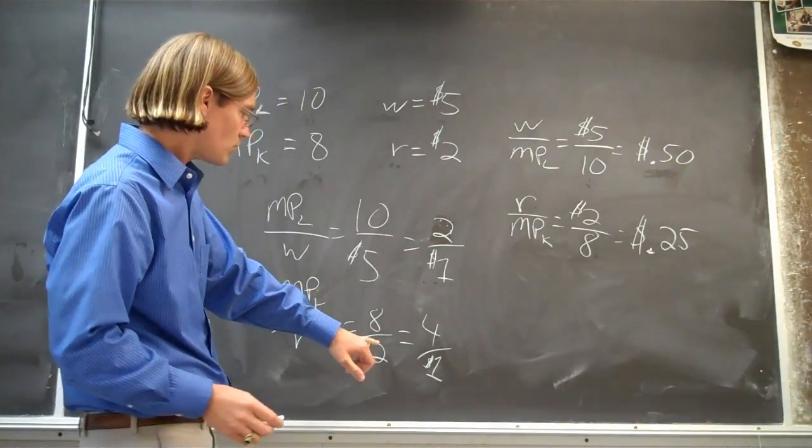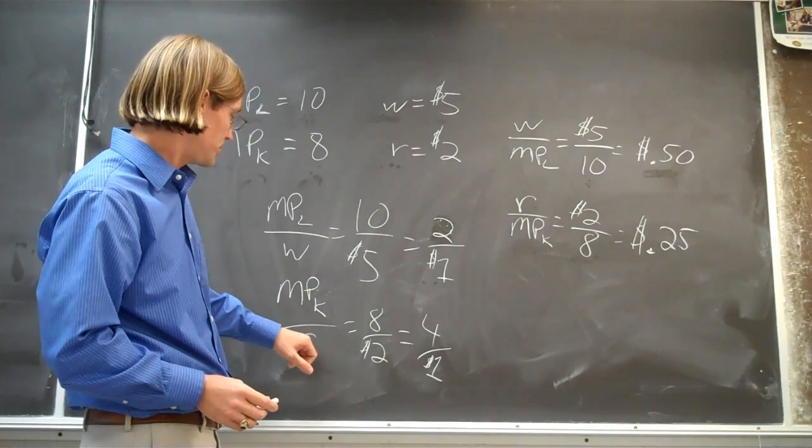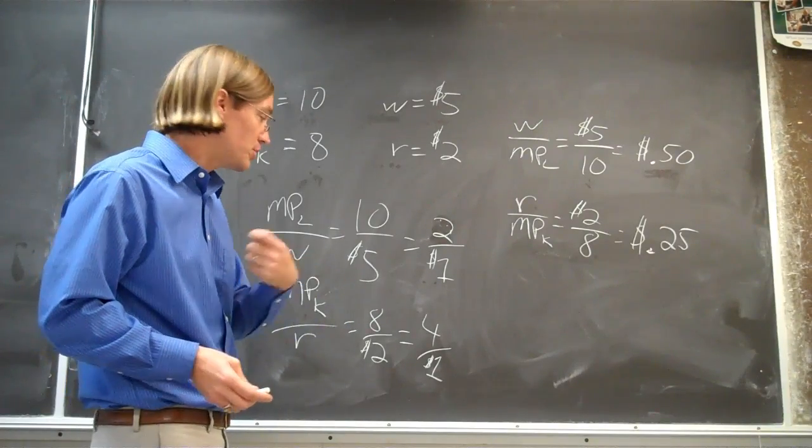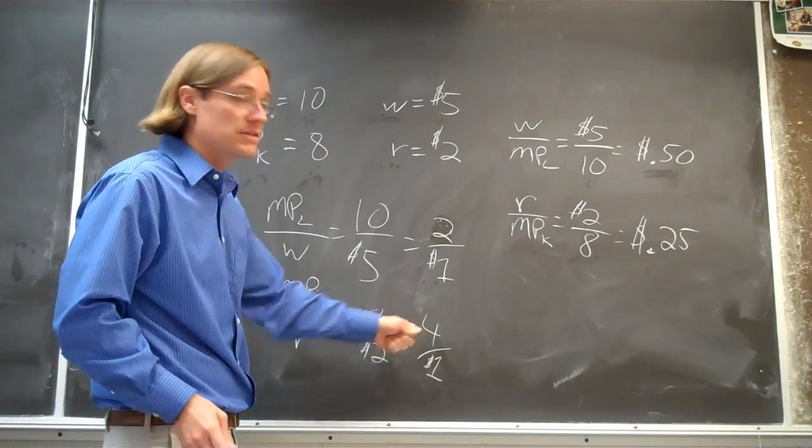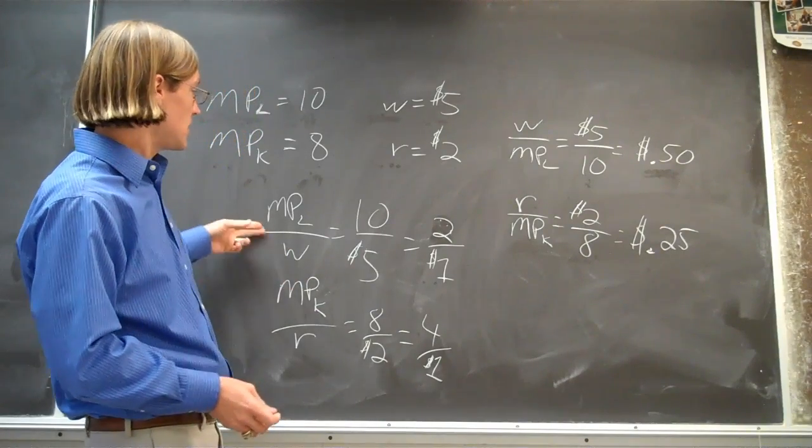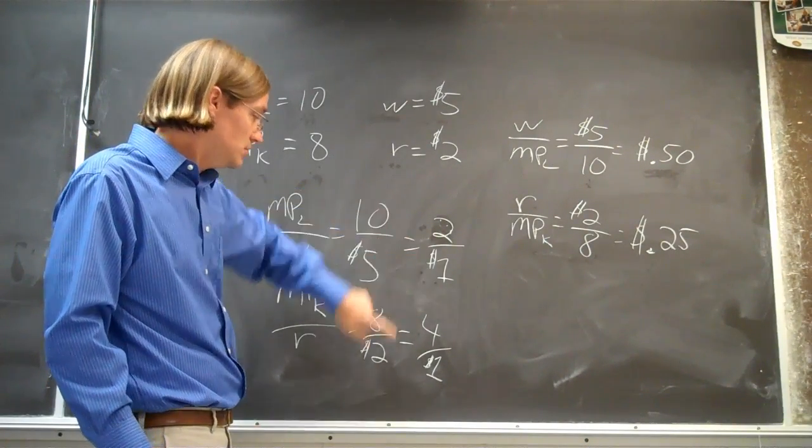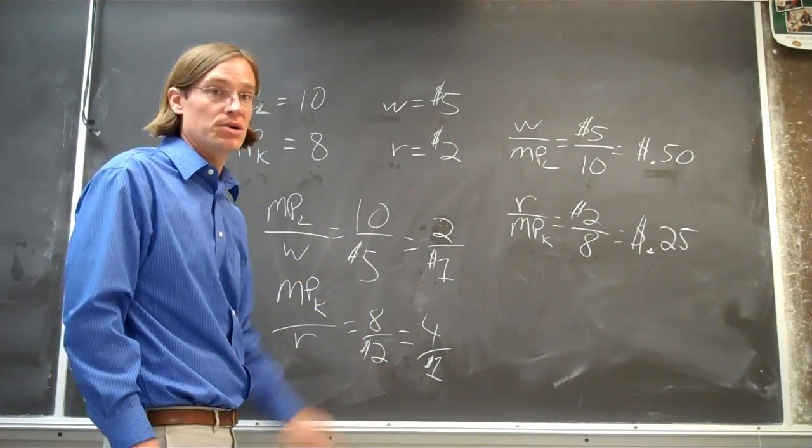So this says that whenever you're spending that last dollar on capital, whenever you employ capital, you're using capital, you spend a dollar on capital and you get 4 units of output. Well, whenever you spend a dollar on a worker, you got 2 units of output. Well, you need to use more capital. You're getting more bang for your buck with capital.